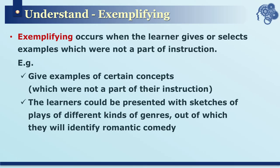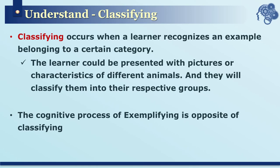The next subcategory is exemplifying — identifying and giving examples. These examples should be ones that were not part of the instruction before. For example, if learners are taught about romantic comedy and are then presented with sketches of plays from different genres, and they correctly identify the romantic comedy, the learning objective of exemplifying has been achieved.